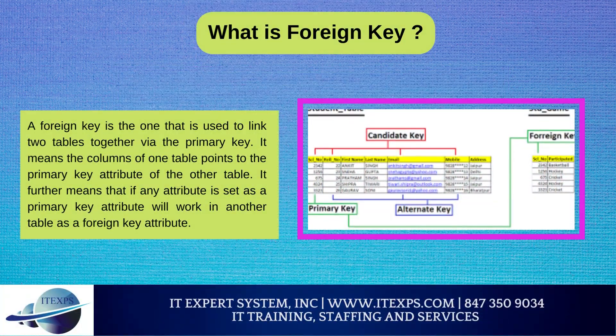What is a foreign key? A foreign key is the one that is used to link two tables together via the primary key. It means the columns of one table point to the primary key attribute of the other table. If any attribute is set as a primary key attribute, it will work in another table as a foreign key attribute. The use of a foreign key is simply to link the attributes of two tables together with the help of a primary key attribute, and it is used for creating and maintaining the relationship between the two relations.